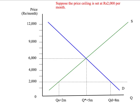But the market isn't allowed to operate freely for rental properties in Mumbai. There's a government policy which puts a cap or maximum price on rent — illustrated here at 2,000 rupees per month. At that price, consumers would like to rent 8 million dwellings, but suppliers are only willing to rent 2 million. Because trade is voluntary, the actual quantity is determined by the short side of the market, so only 2 million dwellings are actually transacted.